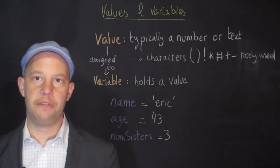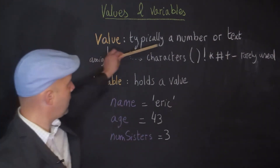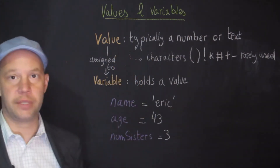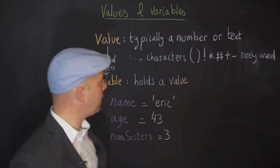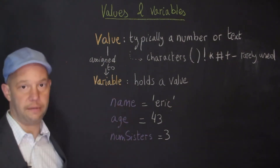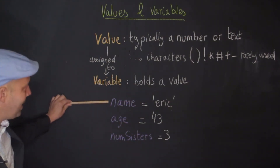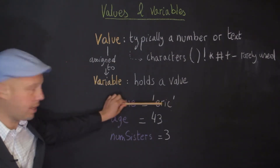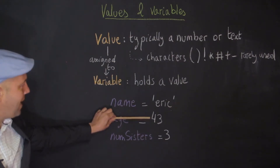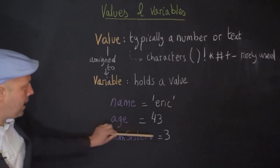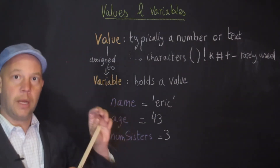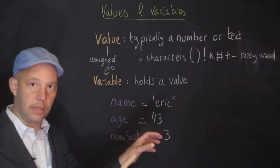In Python, a value is typically a number, a digit, or text (a string). A value is then assigned to a variable — a variable is a name that holds that value. For example, a variable called 'name' can hold the value 'Eric', a variable 'age' holds the number 43, and 'num_sisters' holds the number of sisters. It's important to understand the value, the variable, and the process of assigning a value to a variable.